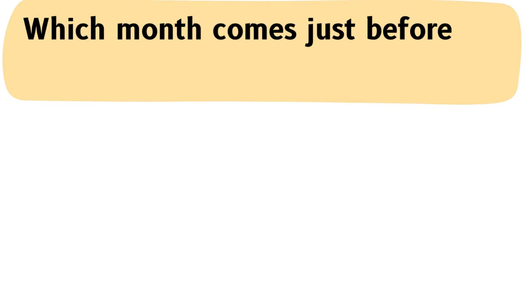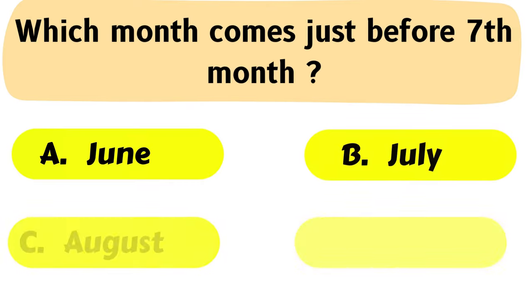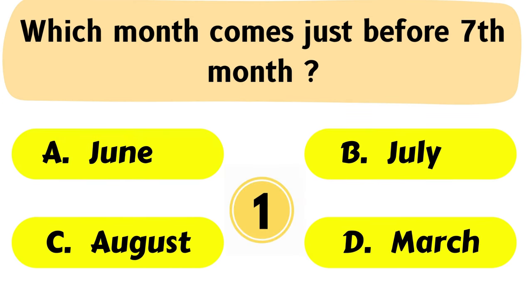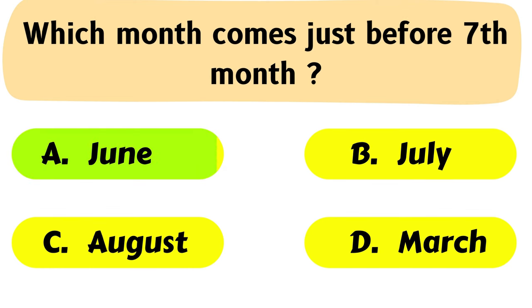Question No. 37: Which month comes just before the 7th month? A. June, B. July, C. August, D. March. The correct answer is Option A: June.